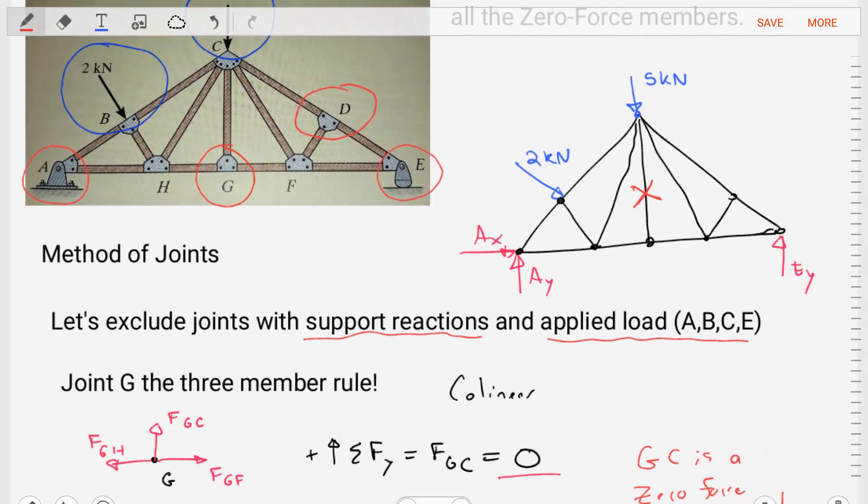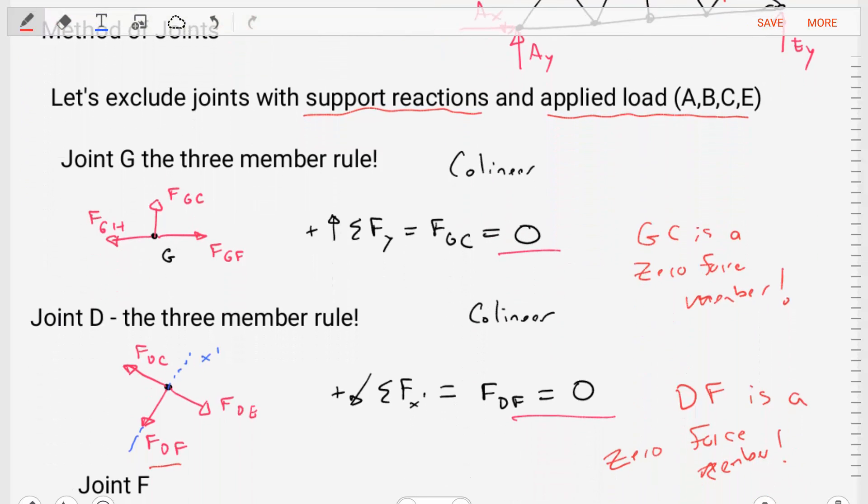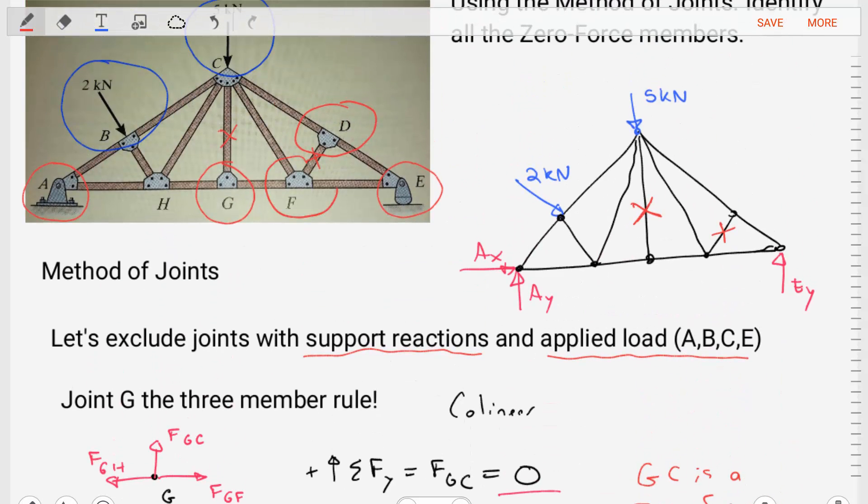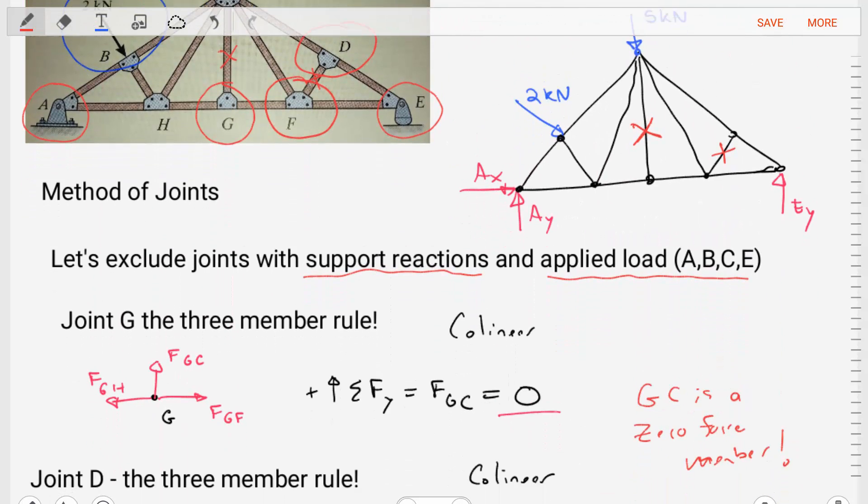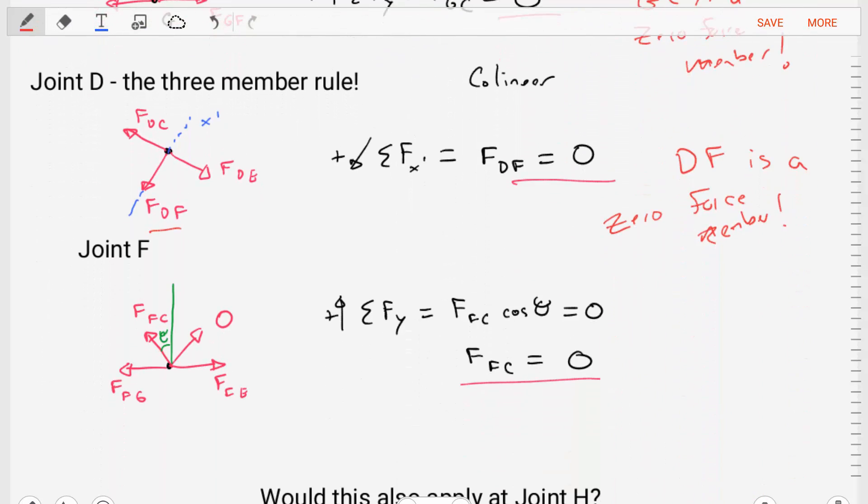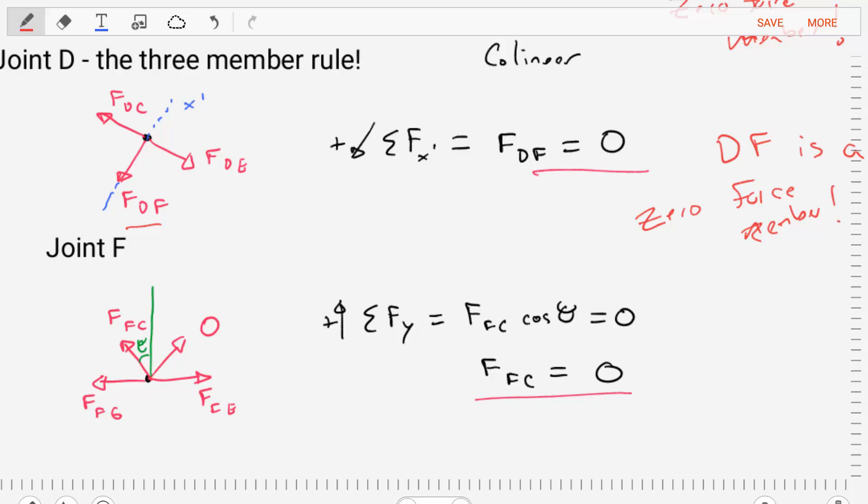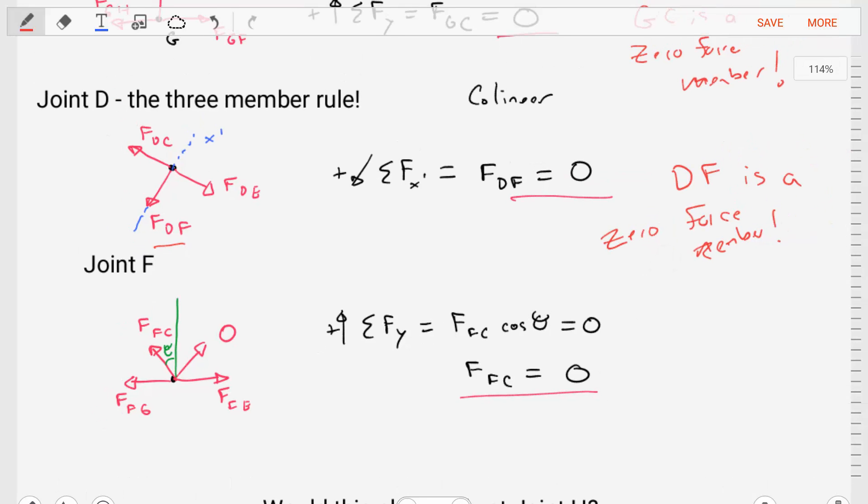So now let's go up to our free body diagram here and then we're going to say that member DF, that member is a zero force member. Now let's continue with another joint. Let's do joint F next. Let's create a free body diagram for joint F. And let's note that we just found that DF was equal to zero, so we're going to set that DF equal to zero here.